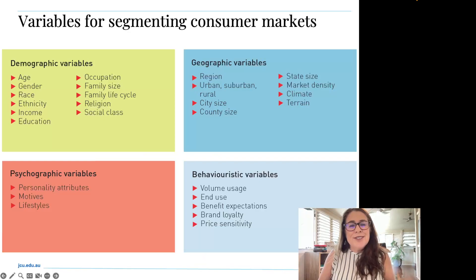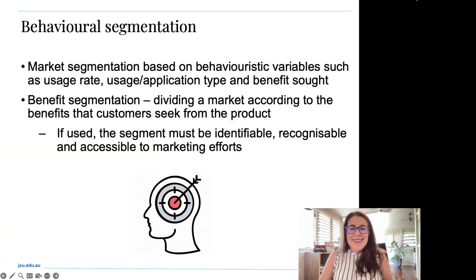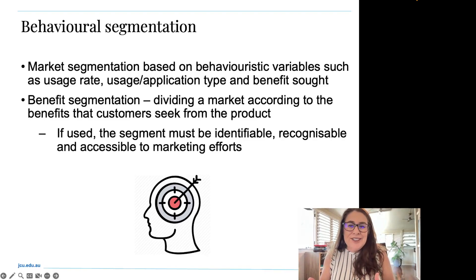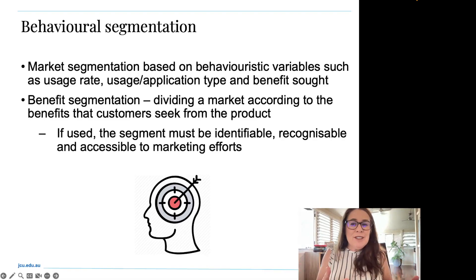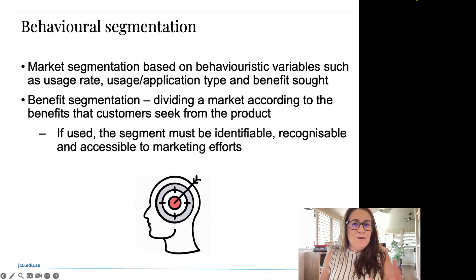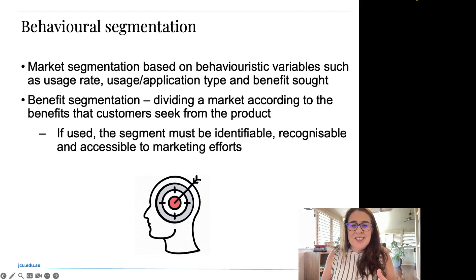Now let's look at the last variable — the behavioralistic variables. These commonly look at the consumer's use of the product: are they regular users or casual users? For example, how does a person use a car — is it for family transportation, weekend getaways, or status? The purpose and how someone will interact and behave with their purchase, as well as how consumers use or apply the products, may also determine the segmentation.